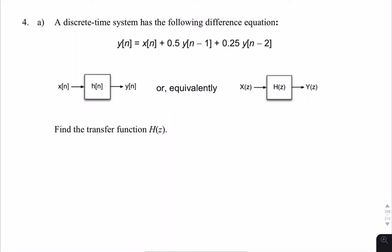This question gives us a difference equation where the input x[n] and output y[n] are related, including delayed versions of y[n]. From the difference equation, we're asked to find the transfer function. The first step is to move everything to the z-domain, finding the z-transform of each of these terms.